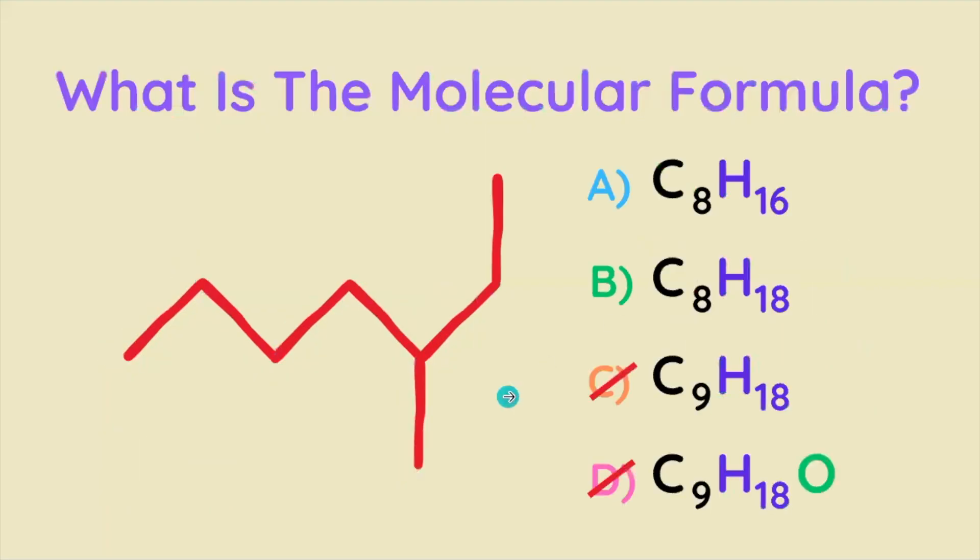That also means that C is wrong because it would imply 9 carbons instead of 8, so the only answer choices left are C8H16 and C8H18. So the question is how many hydrogen atoms do we have because that's the differentiating factor.